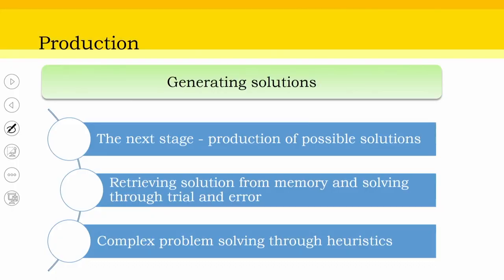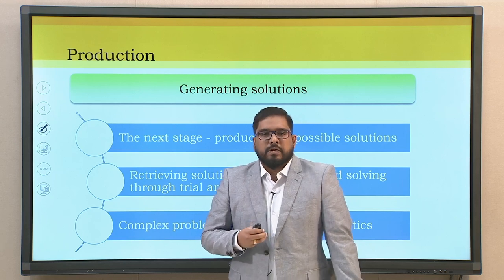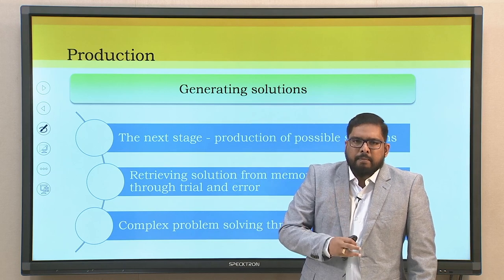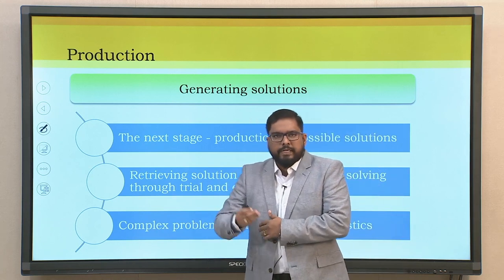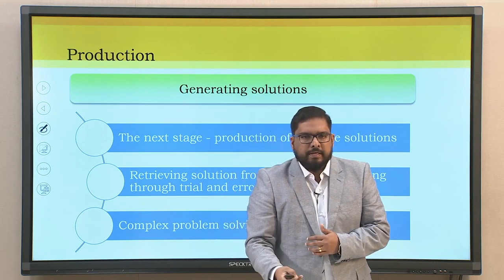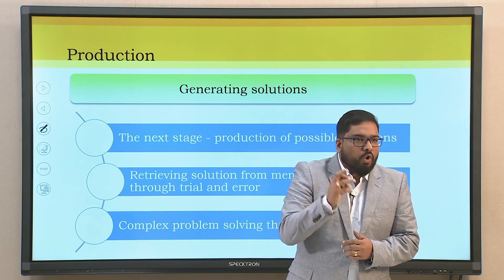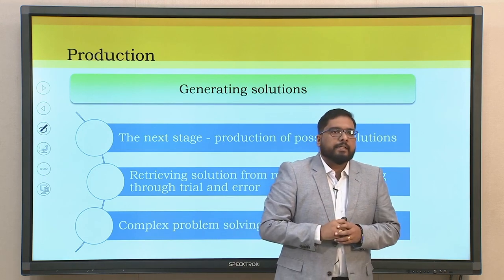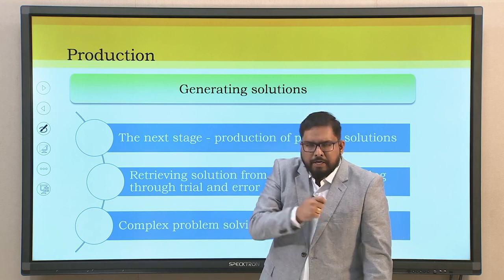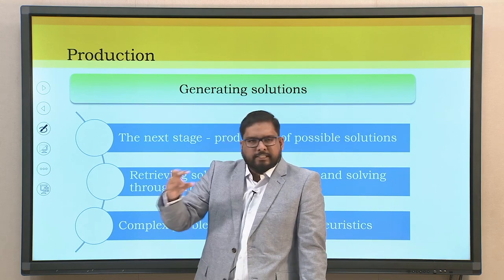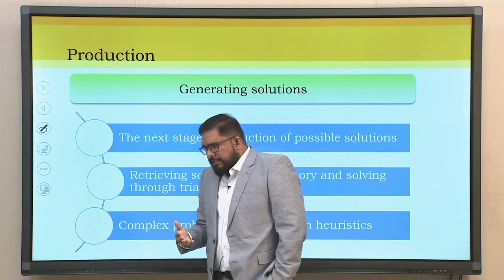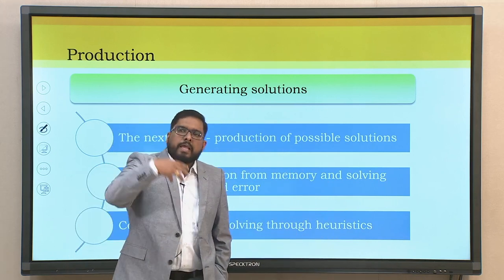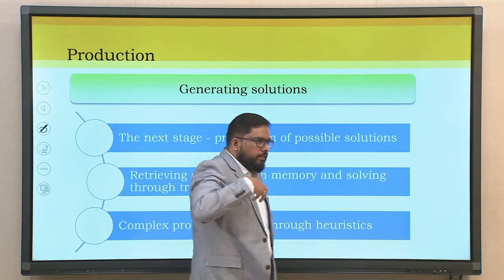The next phase is the production phase, where we attempt to generate solutions. If preparation was tough, generating solutions is a bit more tough. As the stages of problem solving increase, the level of difficulty also increases. Retrieving solutions from memory and solving through trial and error is the first attempt that people generally make. When you look at stunning problem solvers - troubleshooters in your organization - your boss refers to them when a solution is needed in no time.